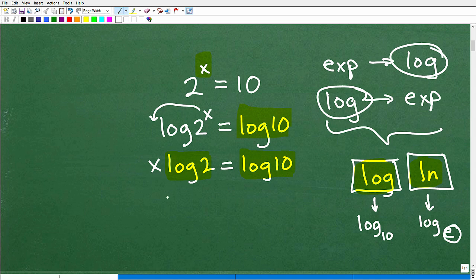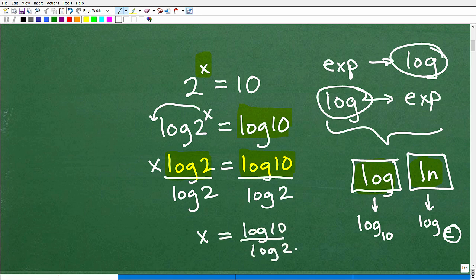So this is nothing like, don't get confused, this is like x times 3 equals 12, or 3x equals 12. So to solve for x, all I have to do is literally divide both sides of the equation by log 2.